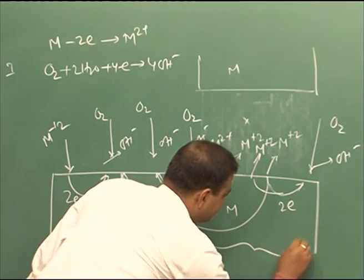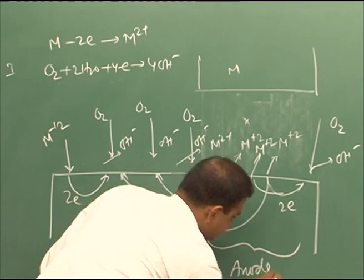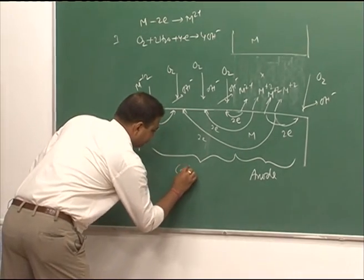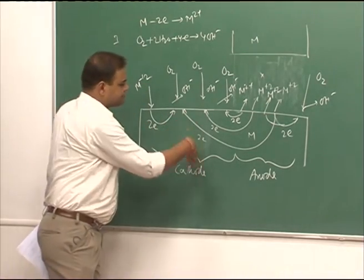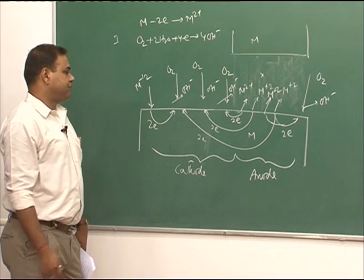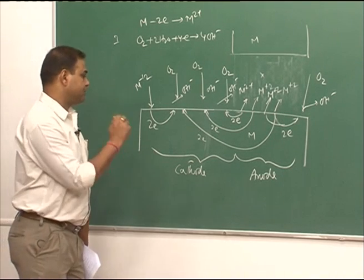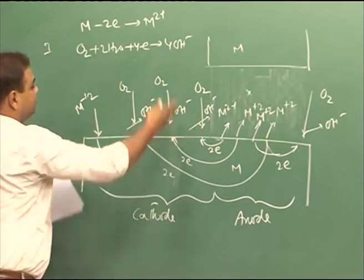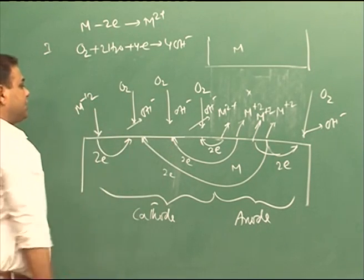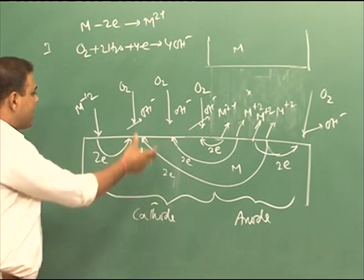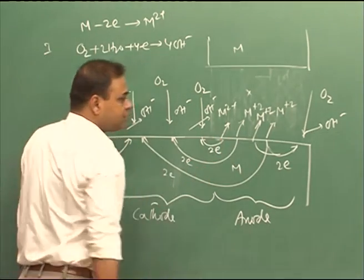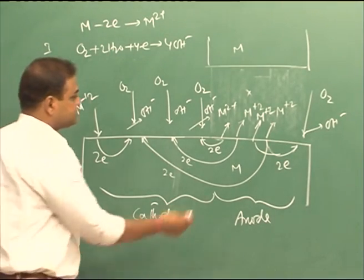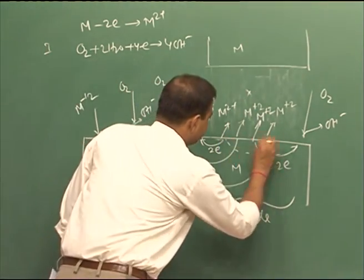Gradually the situation arises where the part inside the crevice will preferentially act as anode, while the rest in contact with the bulk solution — where oxygen reduction and OH⁻ formation take place — will preferentially act as cathode. Once we have this situation, we also have an unfavorable area ratio: the crevice part is a small section but the metal in contact with the bulk solution has a huge area — large cathodic area and small anodic area — which further increases the rate of metal ion formation and corrosion in the crevice zone.